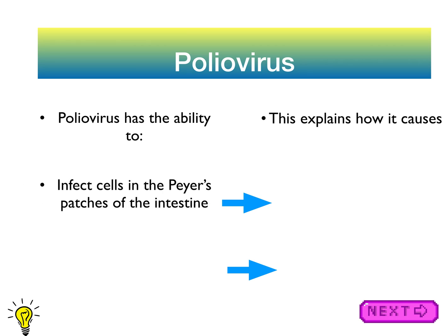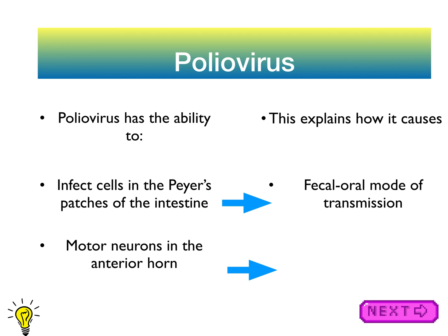Poliovirus can infect cells in the Peyer's patches of the intestine, and also the motor neurons in the anterior horn — specifically the lower motor neurons of the spinal cord. The fact that it infects the Peyer's patches confirms fecal-oral transmission, and the fact that it damages those lower motor neurons explains how it causes paralytic poliomyelitis.